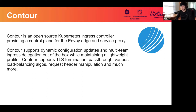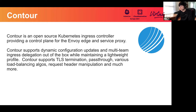Let me kick it off with what is Contour and what we're all about. Contour is the Ingress controller for your Kubernetes cluster, which means it's a piece of software you install into your Kubernetes environment in order to leverage Ingress. Ingress is a Kubernetes concept — one of the preferred ways to bring external traffic into your Kubernetes environment. You might have heard of service type node port or load balancer; Ingress is just one of the options.